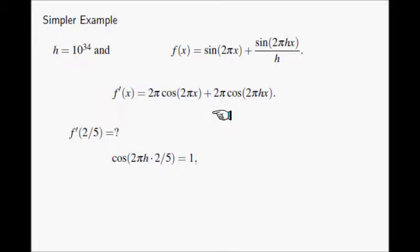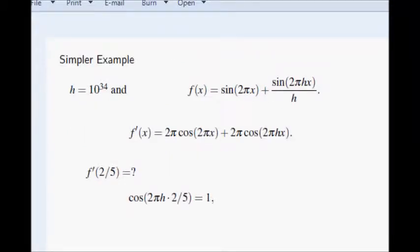So I decided to choose this value 2 over 5 to demonstrate it clearly. So if you plug in 2 over 5 to the second term of f'(x), you can see that 5 and large number of tens in h will cancel and make this one even integer multiples of π, so therefore it's definitely just 1.